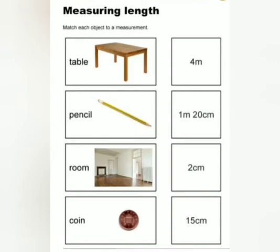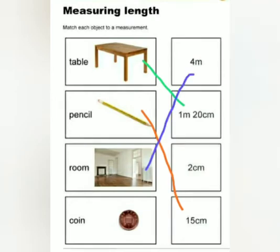Now let's take a look at this worksheet. We have a table, pencil, a room and a coin. One is four metres, one is one metre twenty centimetres, another is two centimetres, and the other is fifteen centimetres. Now we need to match them. So which size would be the table? One metre twenty. How about the pencil? Fifteen centimetres. How about the room? Four metres. How about the coin? Two centimetres.